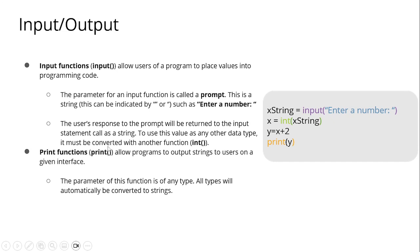The user's response to the prompt will return to the input statement as a string. To use this value as any other data type, it must be converted with another function like int(). Once we prompt the user to enter a number, it is stored in variable x and the value is converted to int. Then y equals x plus 2 — if we enter 2, then 2 plus 2 equals 4, and we print y, so the output is 4. The print function allows a program to output strings to users. All types will automatically be converted to strings.